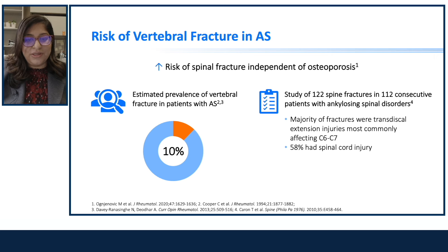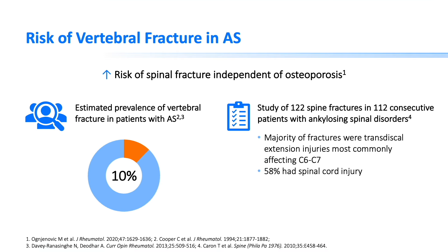There is a high risk of spinal fractures in AS, independent of osteoporosis, with an estimated prevalence as high as 10%. A study published in Rheumatology in 1994 examined 122 patients with spine fractures and 112 patients with ankylosing spondylitis. The majority of fractures involved transdiscal extension injuries most commonly affecting C6-C7, and 58% of these patients had spinal cord injury — a very high incidence.